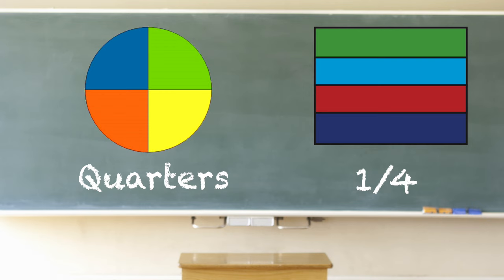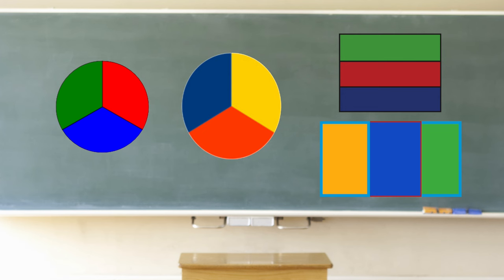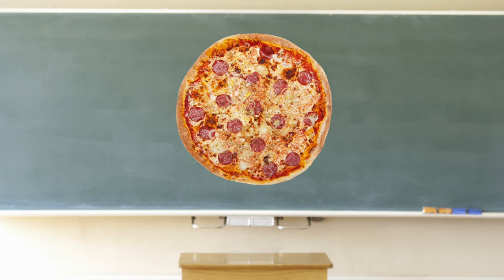Here are some circles and rectangles cut into thirds. The circles and rectangles are cut into thirds. One third of each circle and rectangle is a different color. You can also cut a pizza into thirds. You can now eat a third of the pizza.